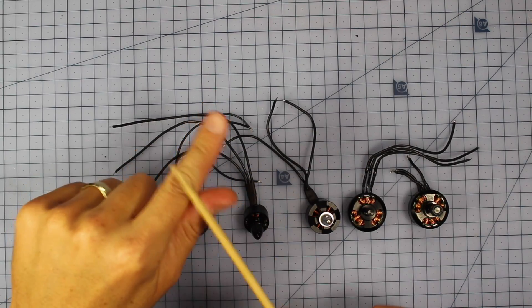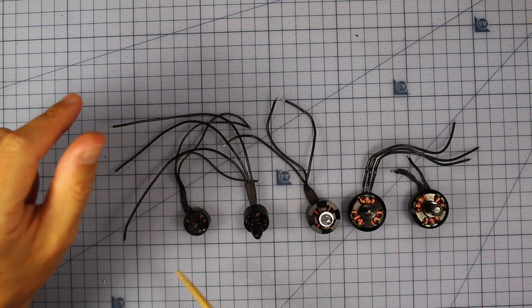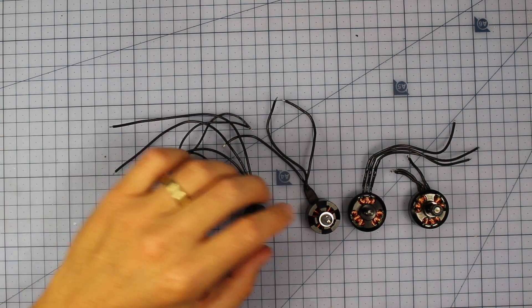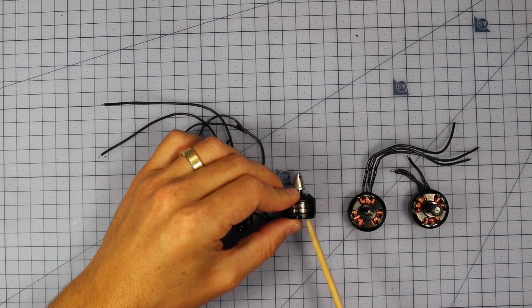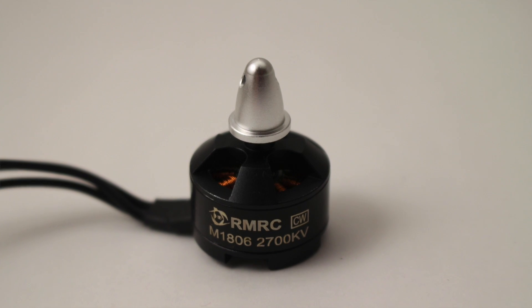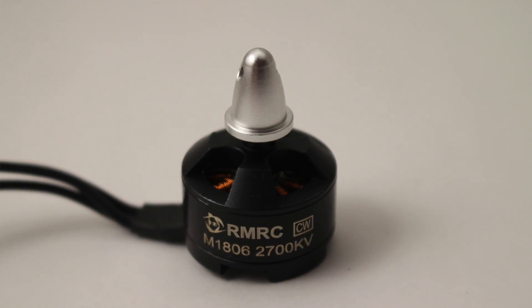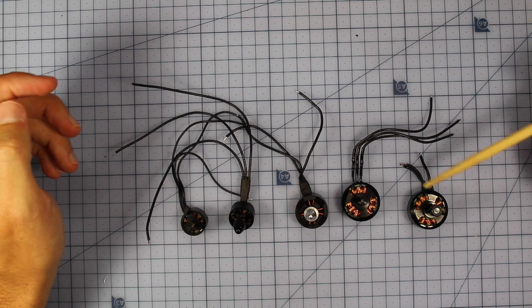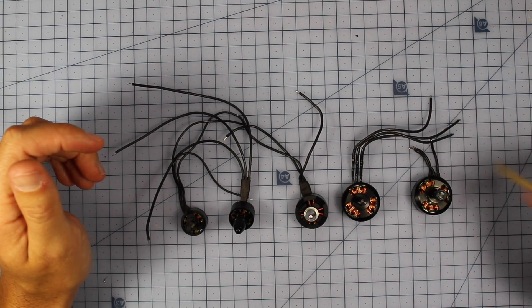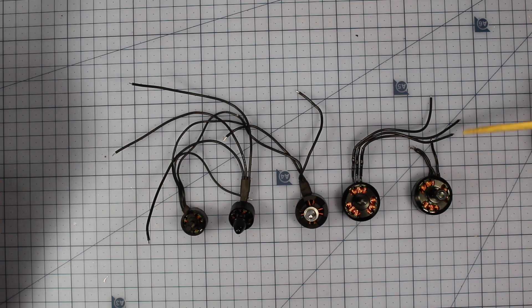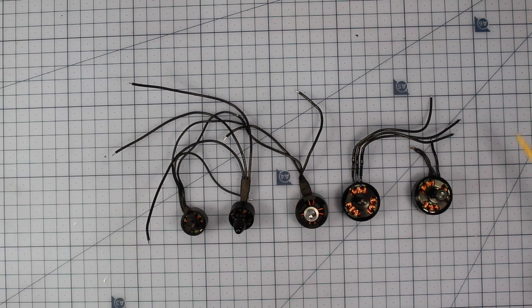This is the second thing you need to consider when choosing your motor, and that is the KV rating. Behind these numbers like the 1806, you're going to see another one which says 2700 KV. What KV stands for is how many times it's going to spin around per volt per minute. It's not the RPM.